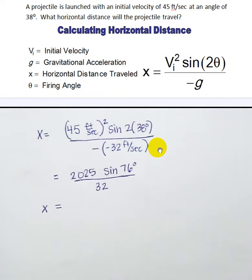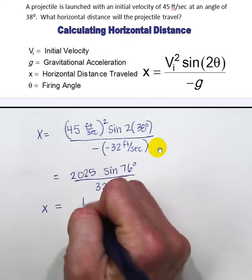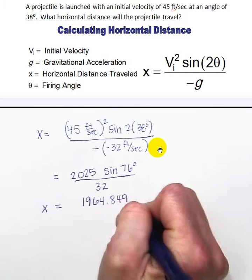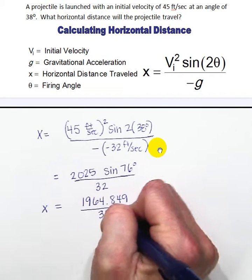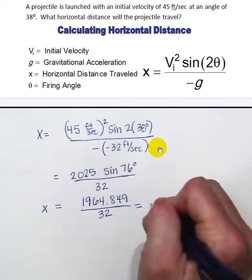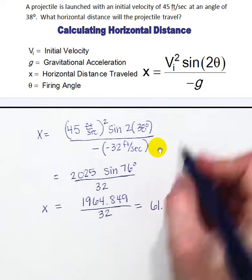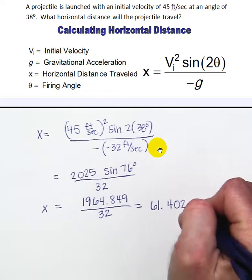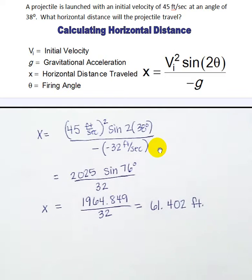So in my calculator I'm typing in 2025 times the sine of 76, and I get 1964.849 divided by 32. The projectile will travel 61.402 feet away from where it's launched.